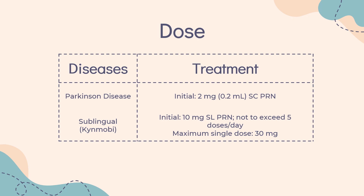For Parkinson's disease, apomorphine is indicated for acute, intermittent treatment of hypomobility off-episodes, including end-of-dose wearing-off and unpredictable on-off episodes. Subcutaneous Apicin: initial dose 2 mg (0.2 mL) SC as needed. Titrate on the basis of effectiveness and tolerance, not to exceed 6 mg (0.6 mL) per dose. Average frequency of dosing in clinical trials was three times daily.